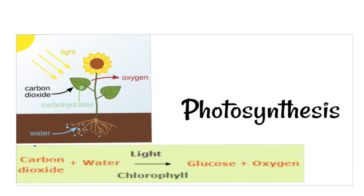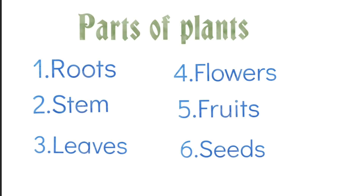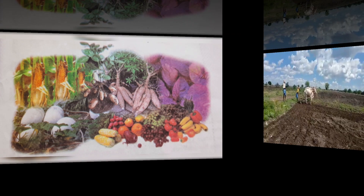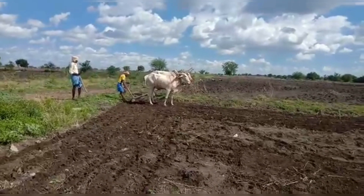As we discussed in the previous video, plants prepare their own food and grow. The remaining food they store in different parts of plants. We use these parts of plants as our food. Come, let's see some of this.